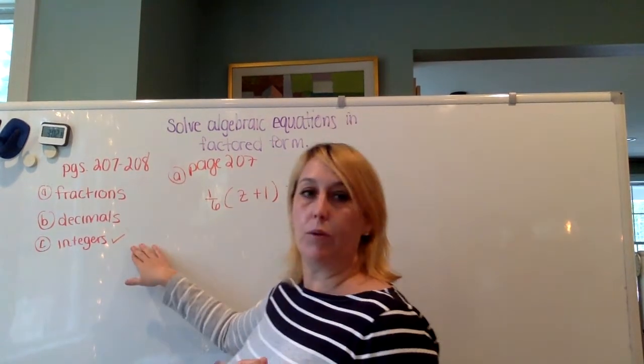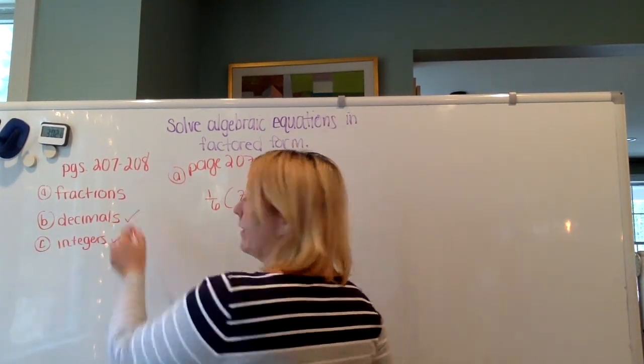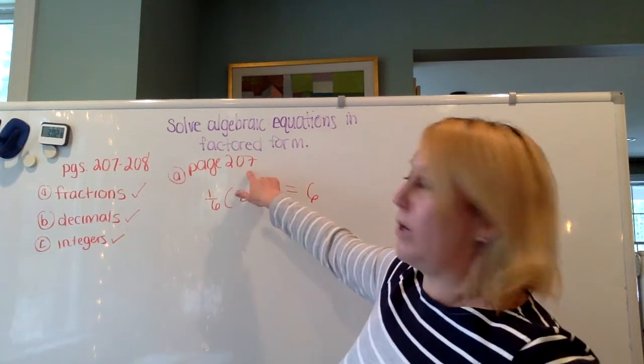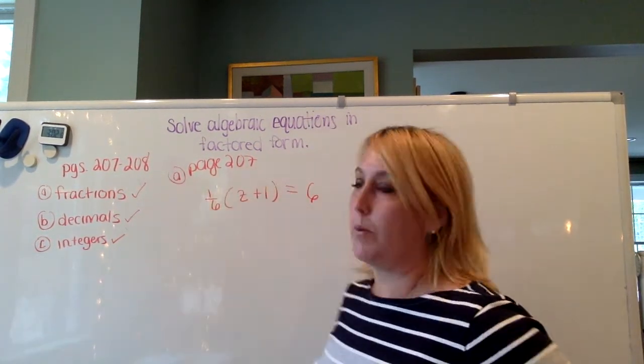So our first example was with integers, our second example was with decimals, and now our third example is with fractions. So I'm on page 207, example A.